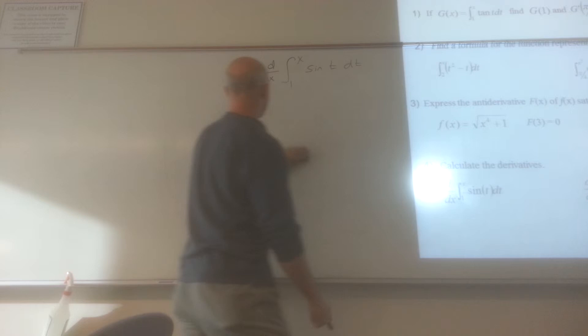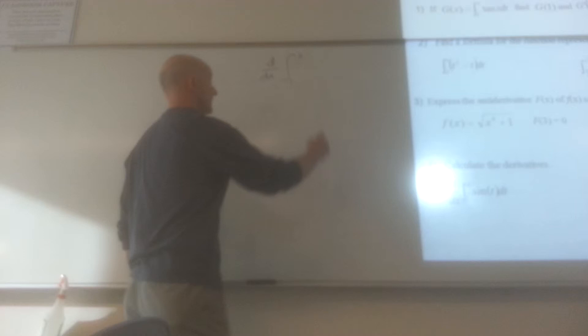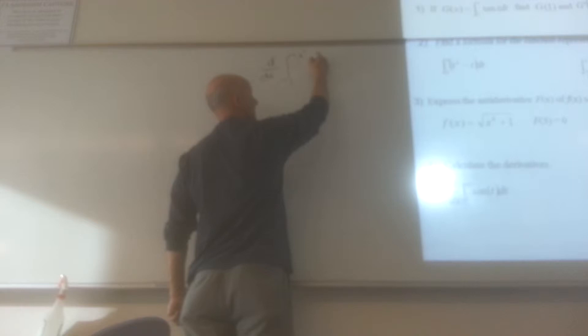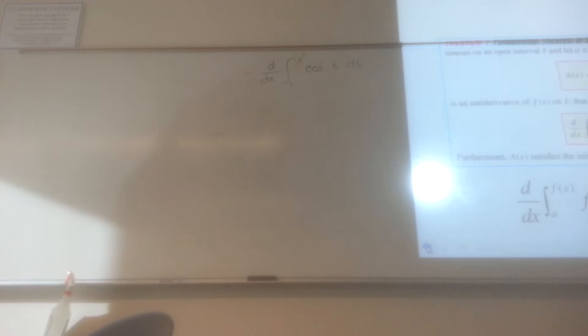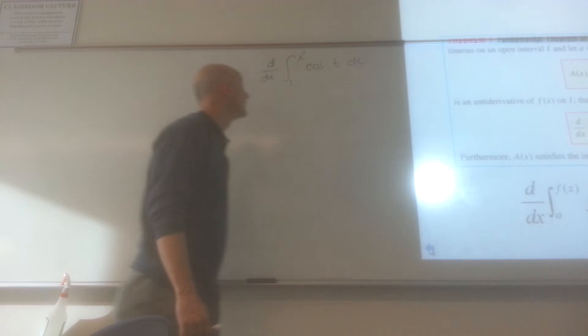So it's asking us to find the derivative of the anti-derivative of x cubed of the cosine of t. So let's kind of go back and see if we can look at the, so we're kind of applying this rule right here. So first of all, what are we going to do with that piece?